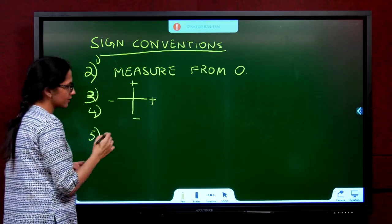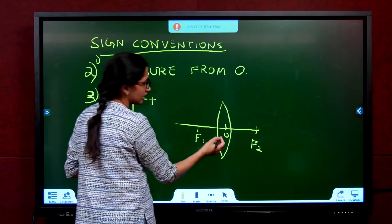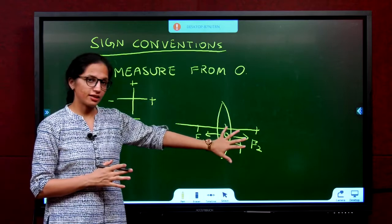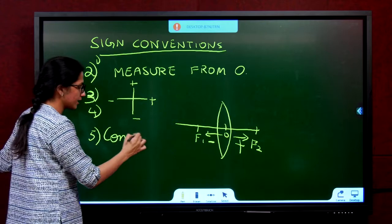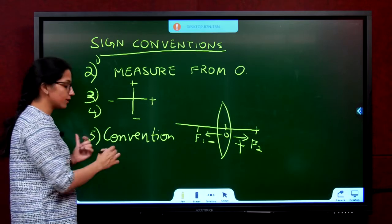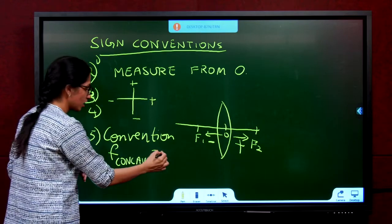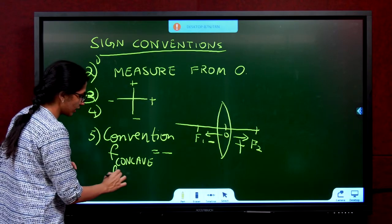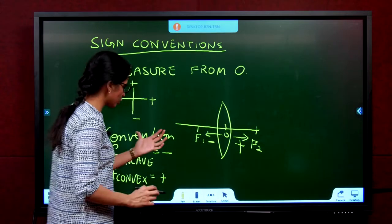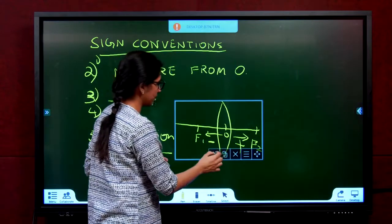An important point: in a convex lens or concave lens you have F1 and F2. One focal length will be negative, the other positive. By convention — similar to mirrors — the focal length of a concave lens is negative, just as the focal length of a concave mirror was negative. The focal length of a convex lens is positive, just as a convex mirror was positive. The same logic applies for radius, though we do not need radius here.